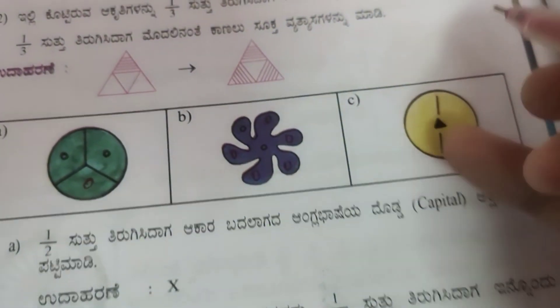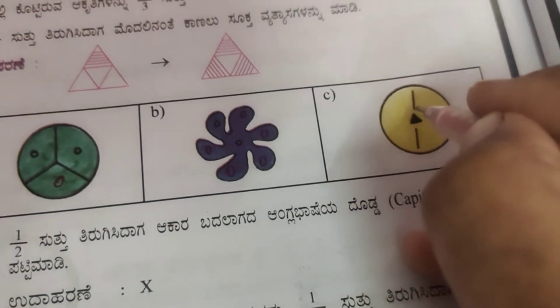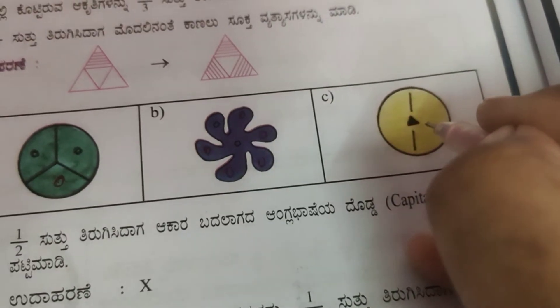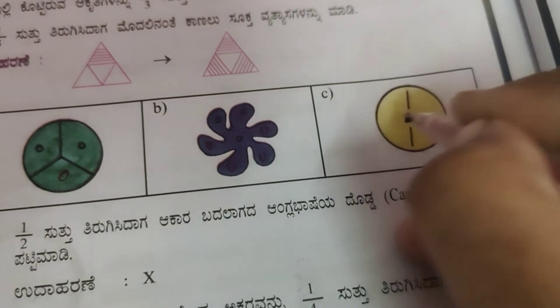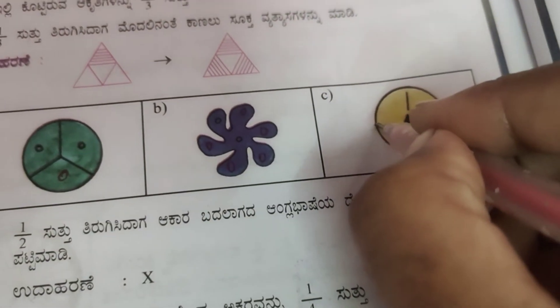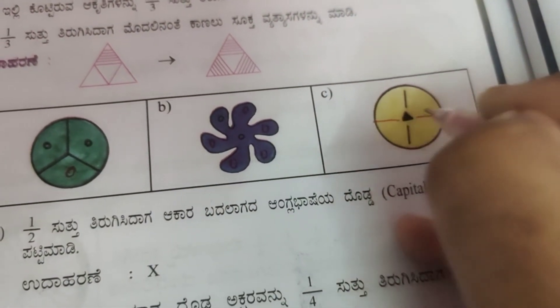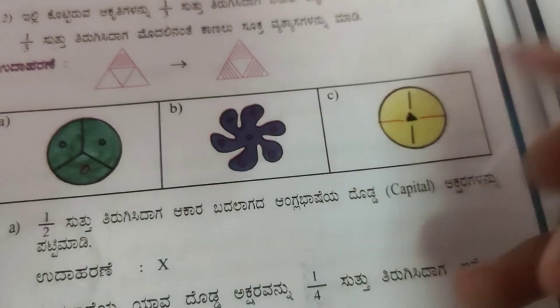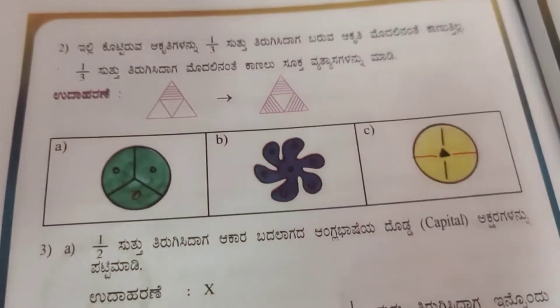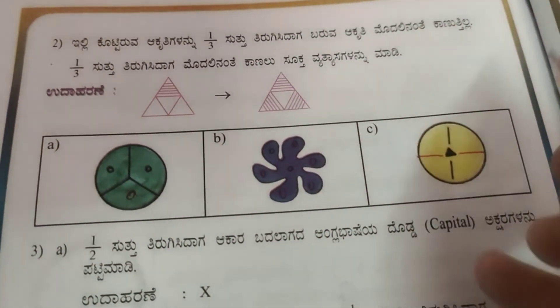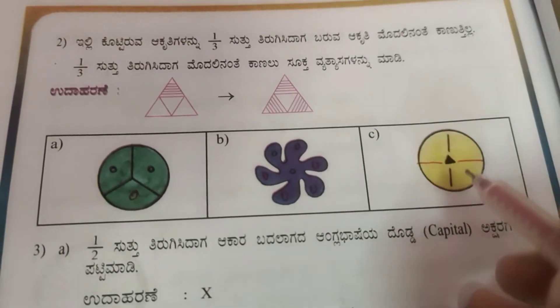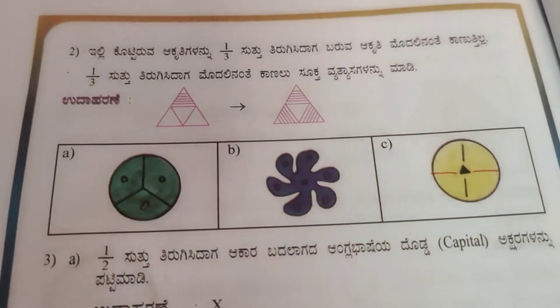Next — if you draw the line here in this way, whether 1 by 3 or 1 by 4 rotation, the same figure will appear. OK.